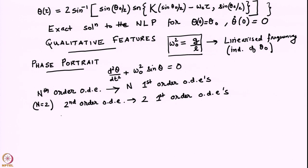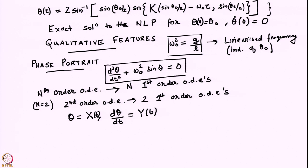The first thing is to rewrite theta as another variable X, then the derivative of theta and call it another variable Y. X and Y are functions of time just as theta and dθ/dt are both functions of time. Going back to our governing equation, if I think of the first term as dy/dt, then it is a first order equation in Y. So I write it as dy/dt + ω₀² sin X = 0. That is the first equation for the evolution of the variable Y.